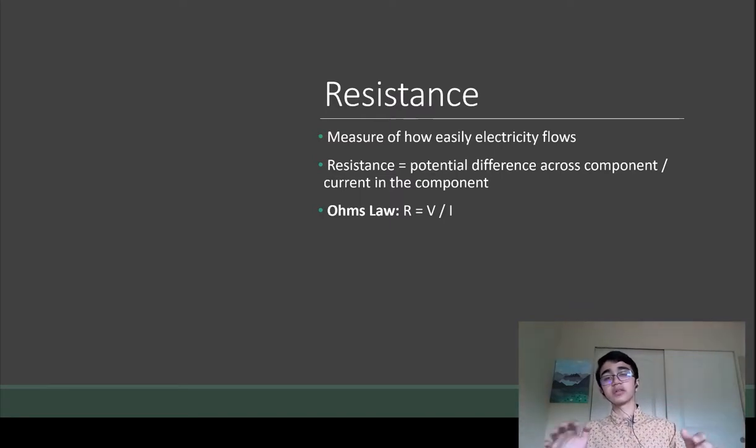If you boil that down to the variables: R is our variable for resistance, V is the variable for potential difference, and I is the variable for current. So R equals V over I, and another name for this equation is Ohm's Law.